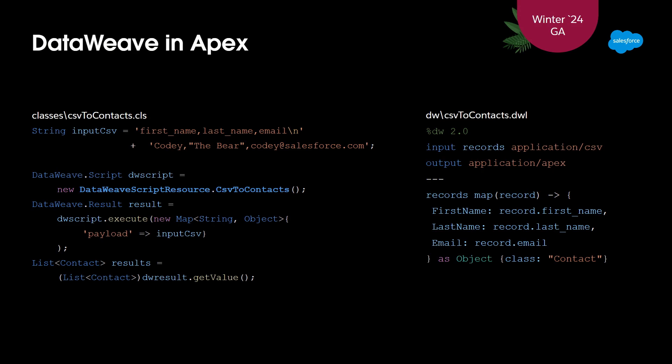Five people asked me on Tuesday: which MuleSoft SKUs do I need to purchase to enable this feature? Happily, you do not need to buy any SKUs - it's free wherever you've got Apex today. We have considered the packaging scenarios with your scripts. You can mark them as global or public depending on how you want to expose them to your subscriber orgs. AppExchange security review is also all approved and ready to go.